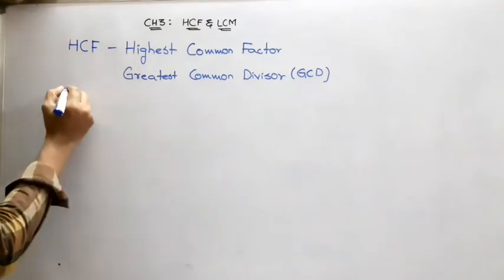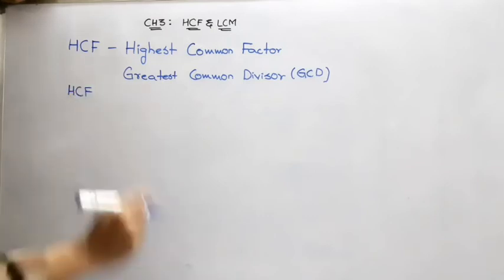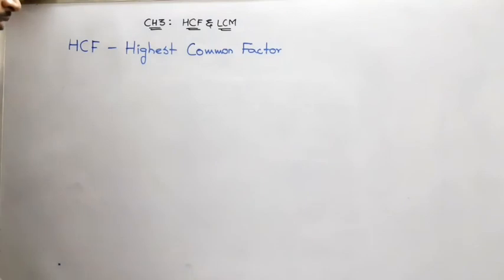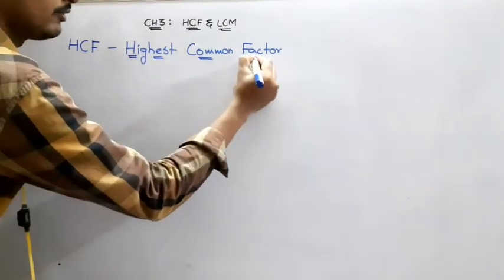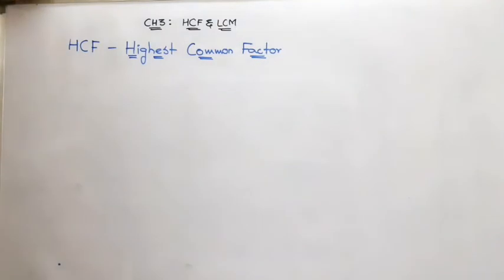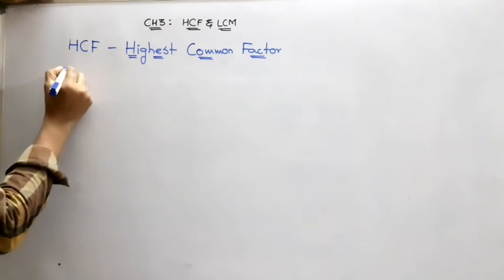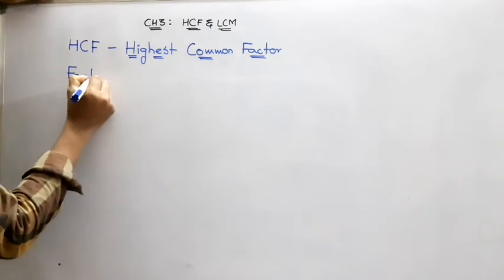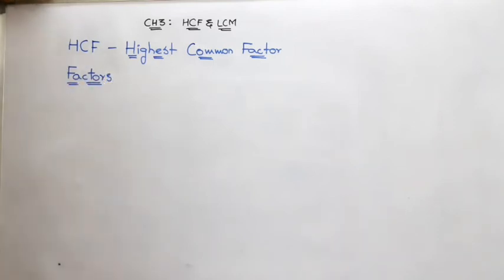In HCF, we have three words: highest, common, and factor. I think you might have already come across finding the factors for given numbers. So let us repeat the concept again to have a firm foundation to move ahead with this chapter.